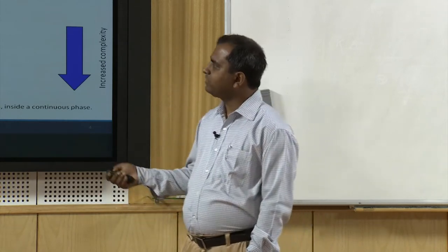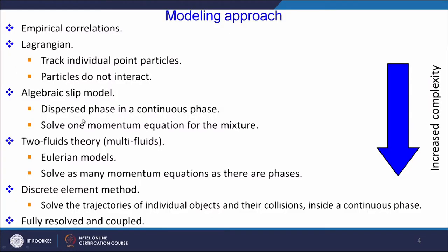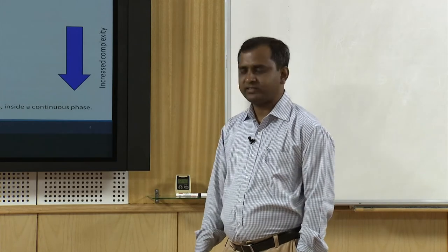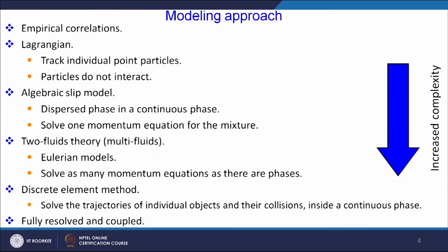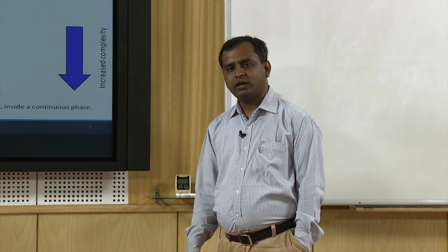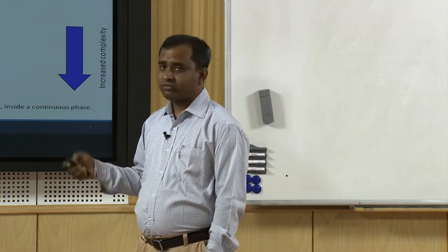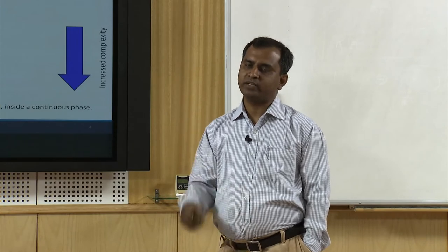Then came the idea of algebraic slip model, where the dispersed phase is present in the continuous phase — there is a well mixed dispersion between the primary and secondary phase — and we solve a single momentum equation for the mixture. This type of model includes your homogeneous equation model and drift flux models. In the homogeneous equation model, we consider that uniform properties are there based on the void fraction of the phases. Algebraic slip models also consider slips between the phases.